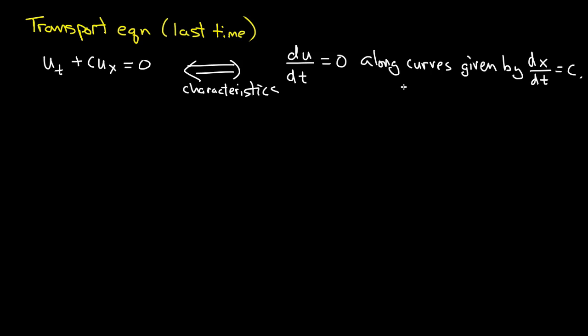du/dt is equal to 0 along curves given by dx/dt is equal to c. And in this case, they're just lines. So this is the technique of solution. To look at the problem like this, rather than like this. So first of all, let's figure out what these guys are. This is not so hard, right? This is dx/dt equals c, that's just a constant, and that implies then that x is equal to c times t plus x_0, where x_0 is a constant of integration.